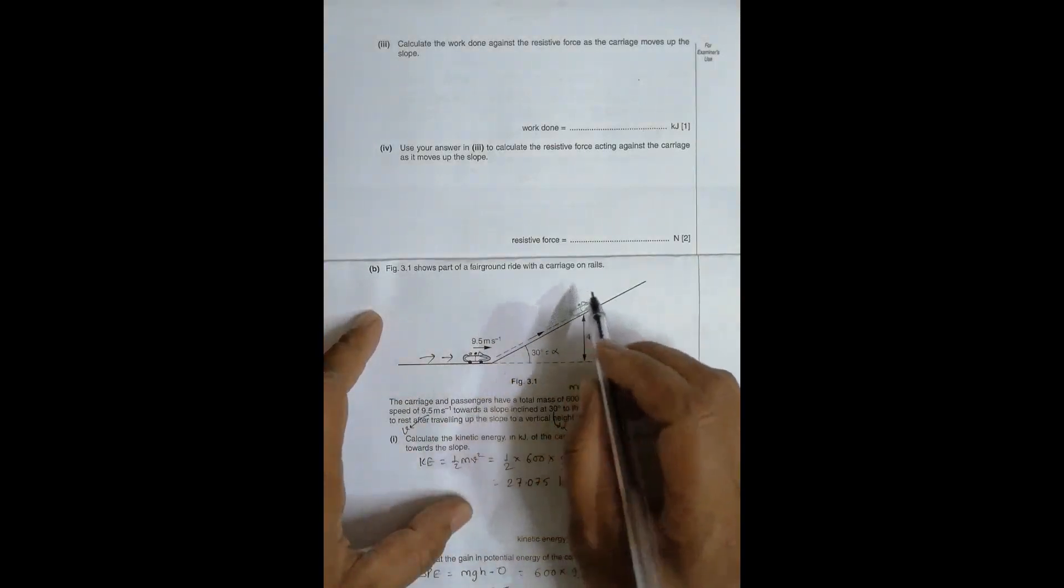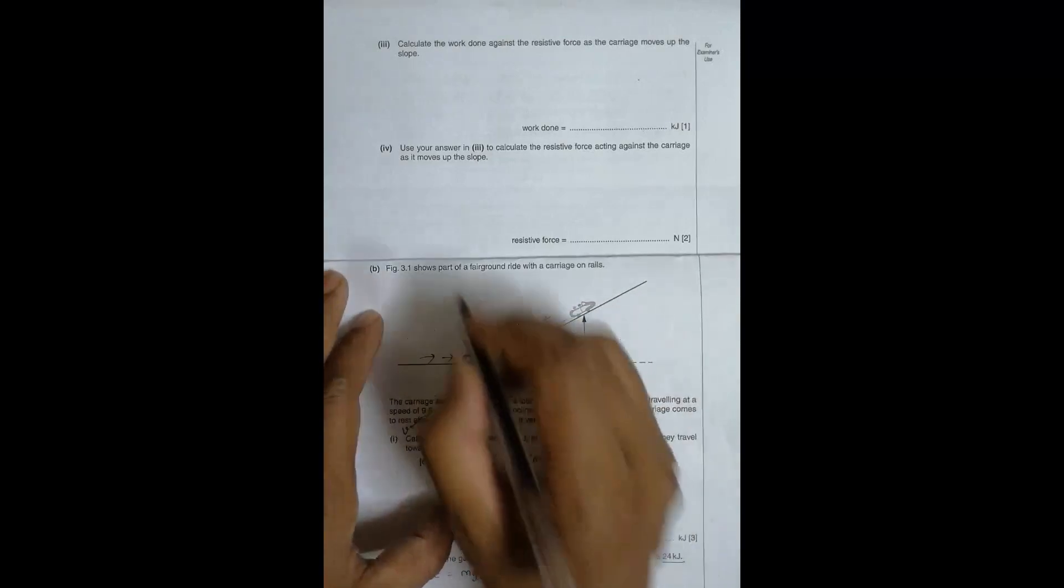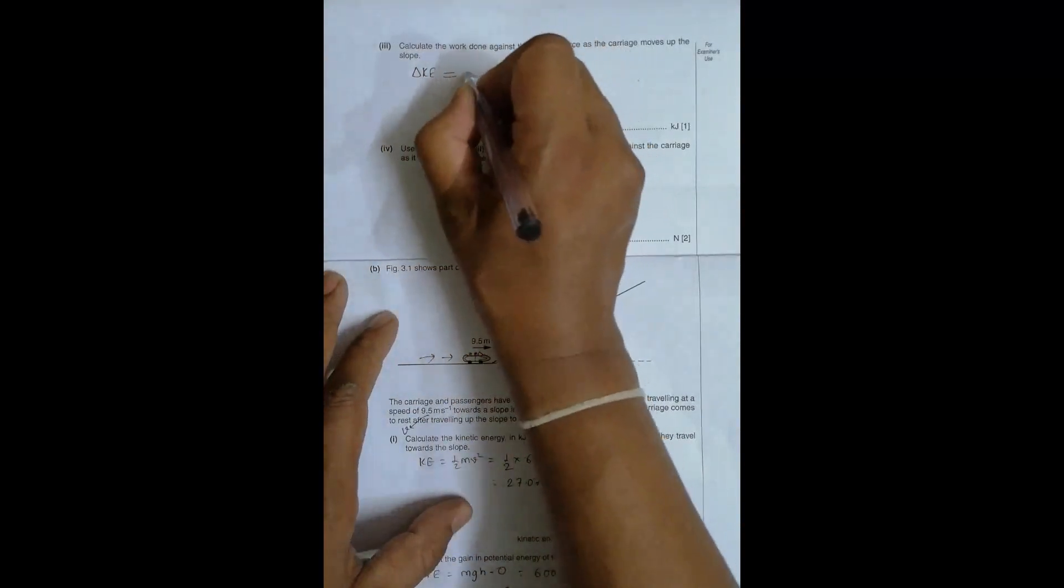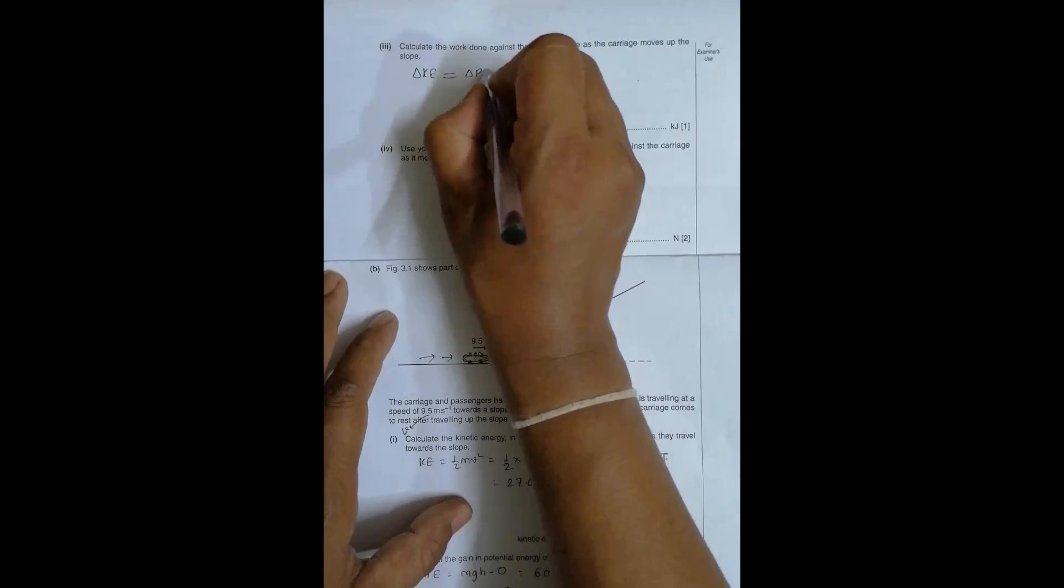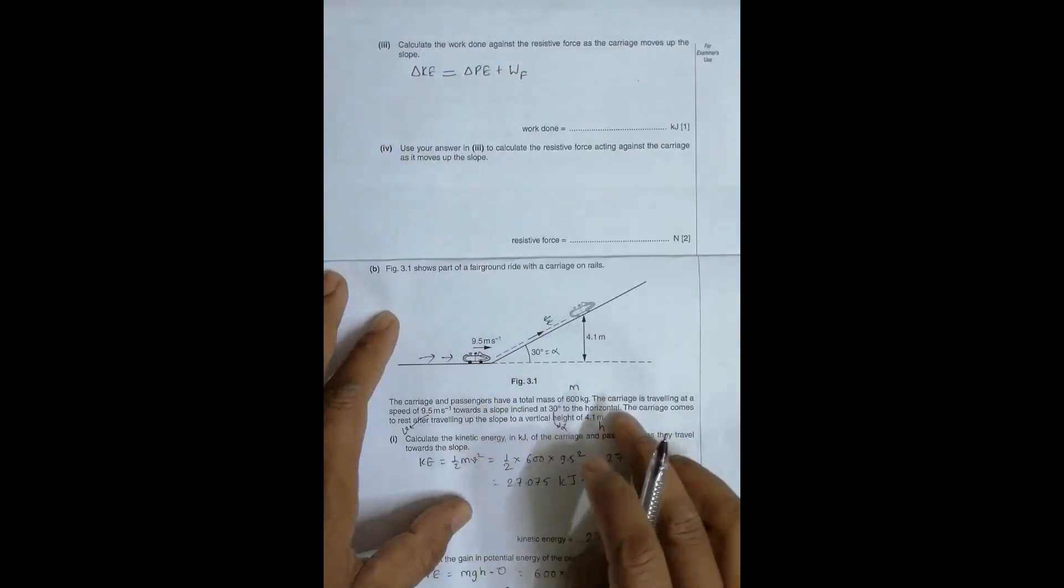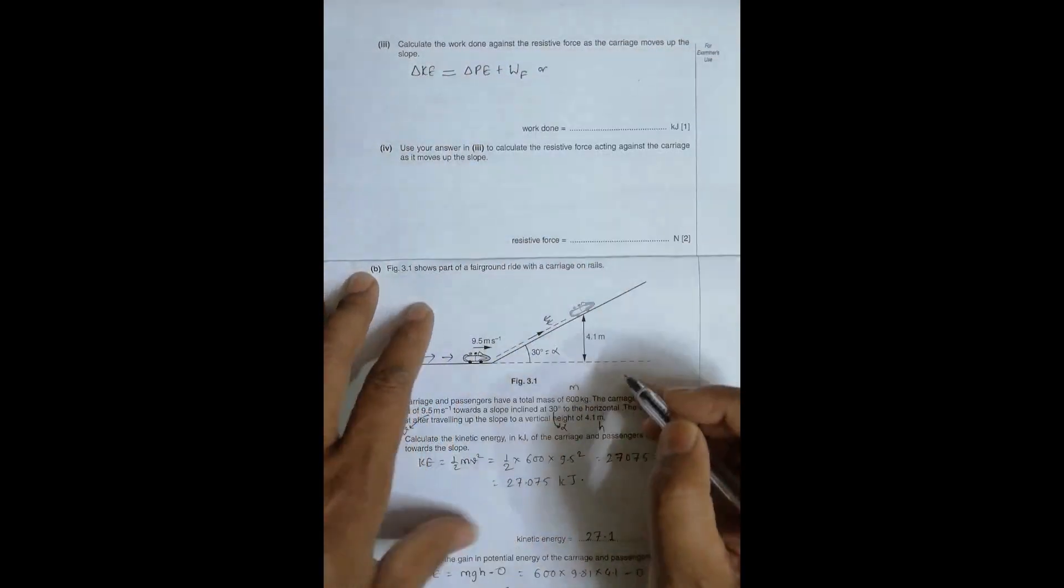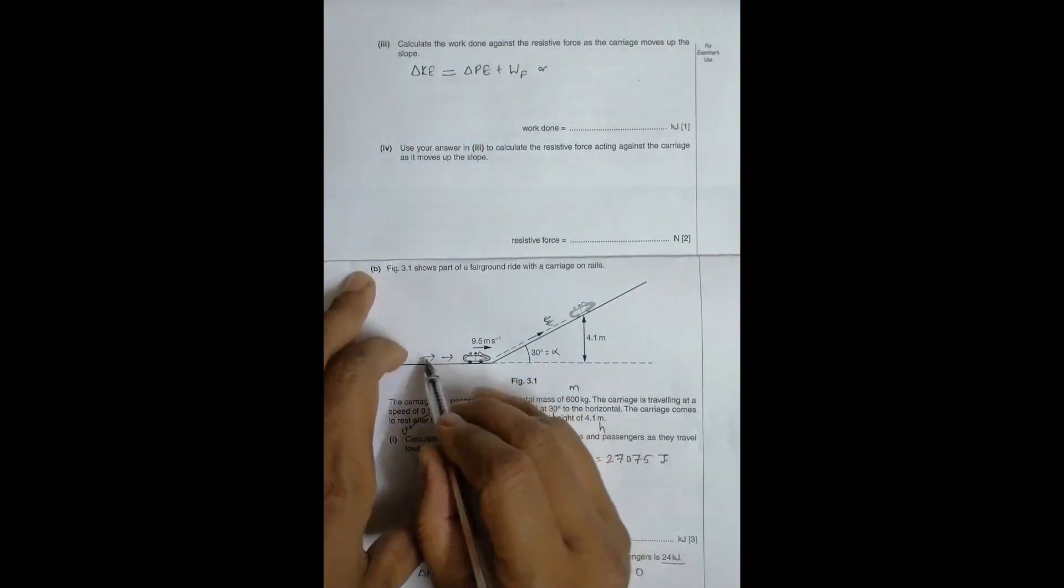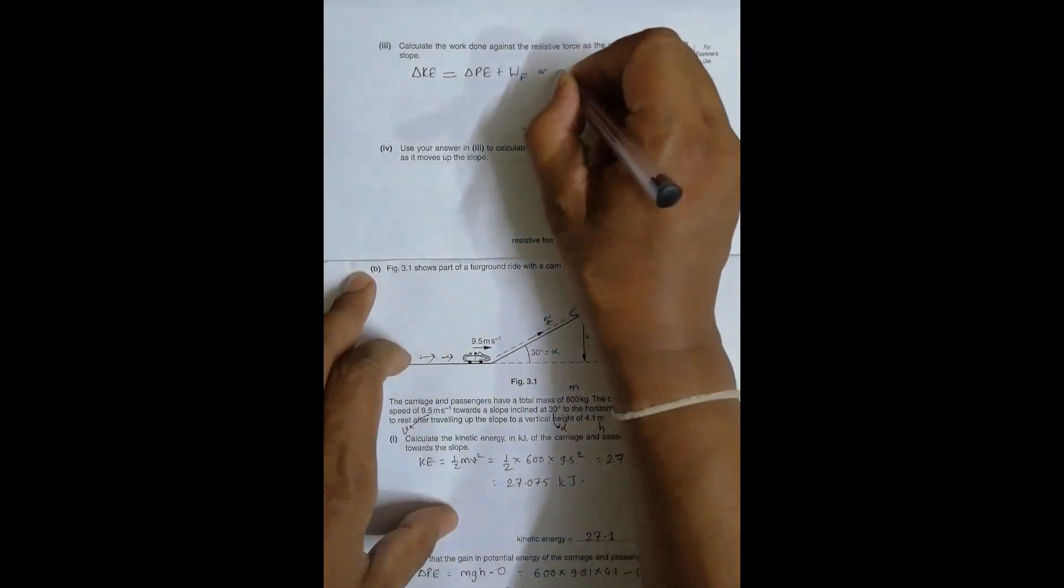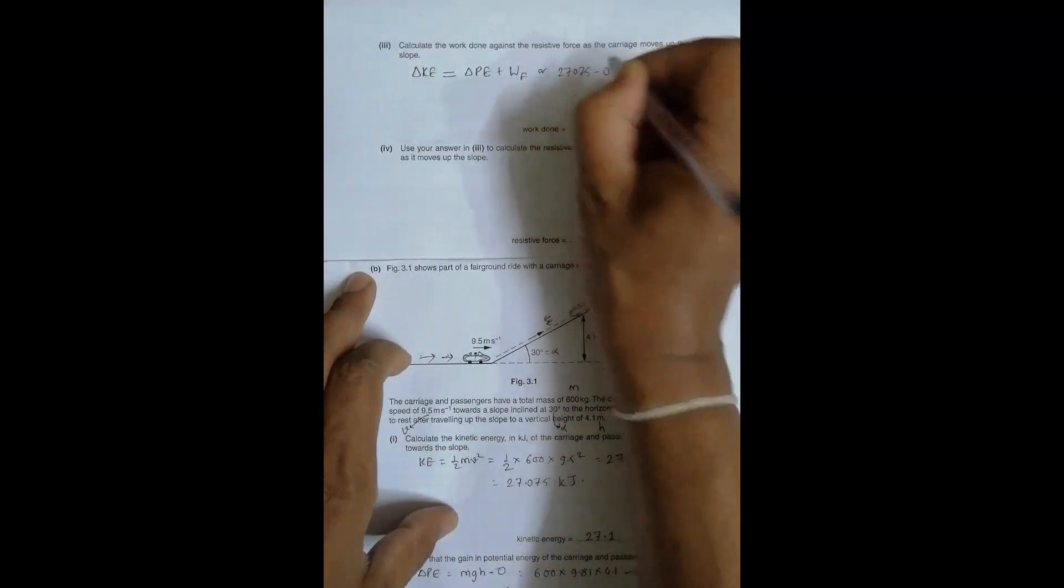This ΔKE was utilized in increasing the potential energy plus doing work against friction. So our equation should be: the KE that it possessed in the beginning, which was equal to 27,075 minus 0, equals ΔPE which is 24,132 plus the work against friction WF.